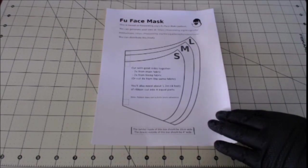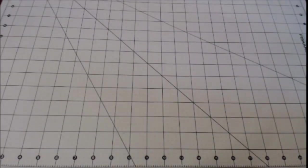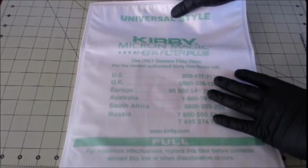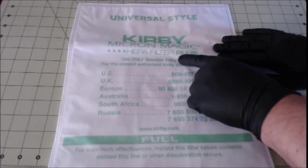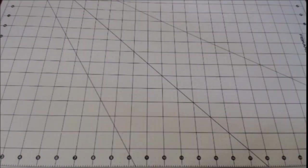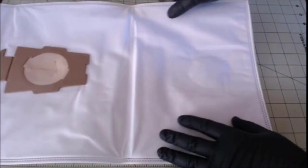And then for the filter material itself, we're going to be using a Kirby HEPA Filter Plus. Make sure you get the plus, or a similar filter that has .1 or .2 micron filtration. Regular filters are only good to 3 micron.